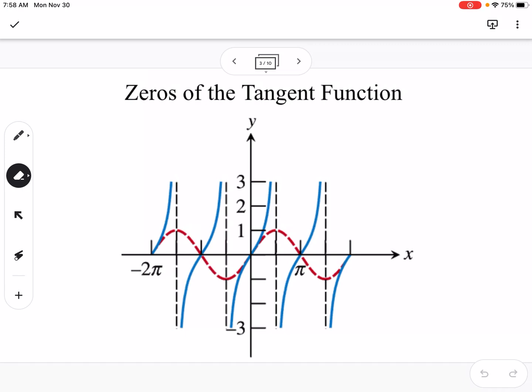The zeros, so the zeros are where our graph crosses the x-axis. If we think about tangent as sine over cosine...